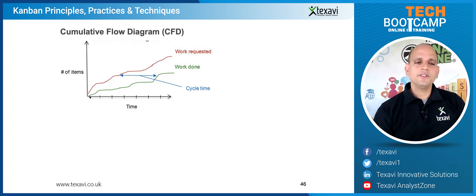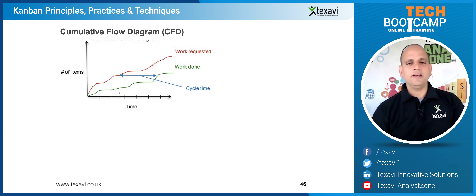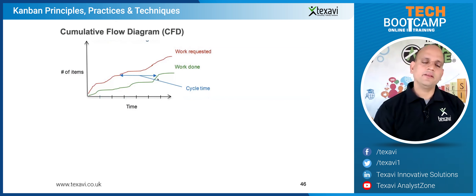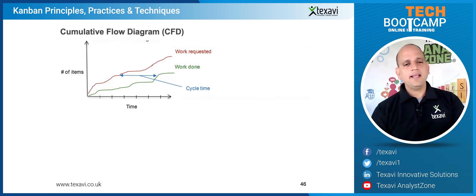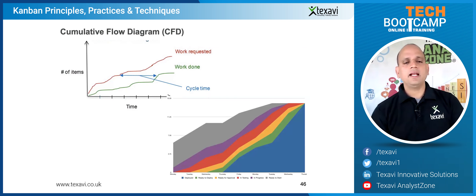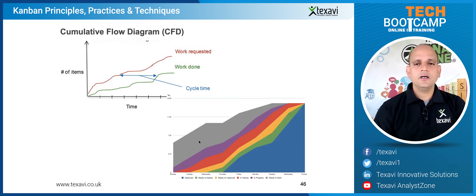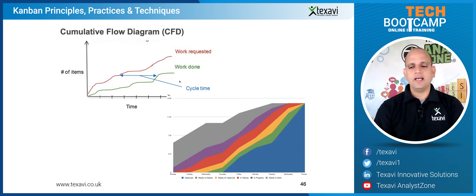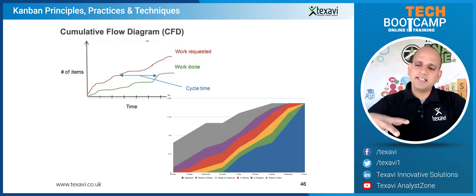The CFD actually shows how much work has been completed over a period of time — what work is still to be done and what work is done. There is also the aspect of cycle time and lead time, which are measured and assessed in Kanban, similar to how velocity is used in Scrum. The CFD builds up over a period of time rather than going down.